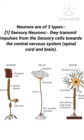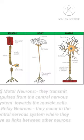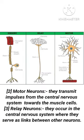Neurons are of three types. Sensory neurons transmit impulses from the sensory cells toward the central nervous system. Motor neurons transmit impulses from the central nervous system toward the muscles.